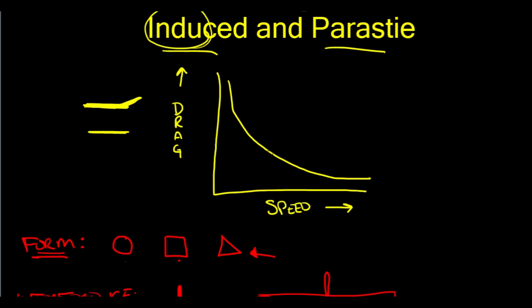And we can graph that also. Now, we can graph just parasite drag, which we should do first. So at low speed, it's low drag.